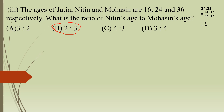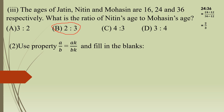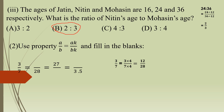Now let's move to the next question. Use the property A upon B equal to A into K upon B into K, and fill in the blanks. Given: 3 upon 7 equals dash upon 28 equals 27 upon dash equals dash upon 3.5. The denominator 7 multiplied by 4 gives 28, so multiply the numerator by 4 as well: 3 into 4 equals 12. So the first blank is 12.